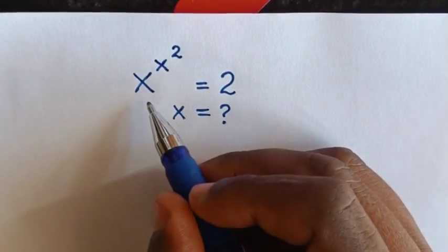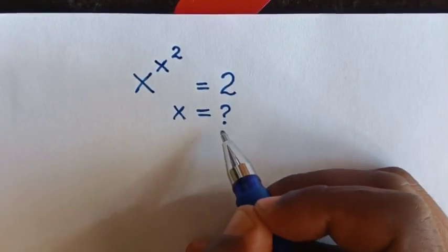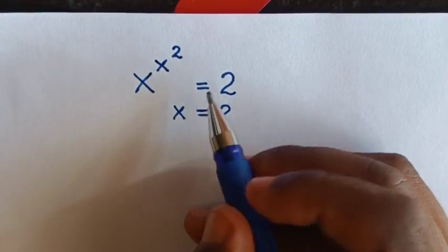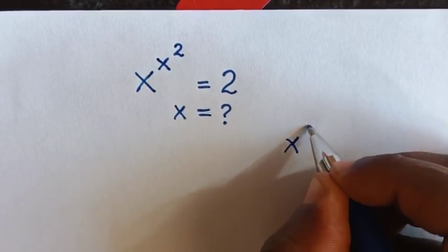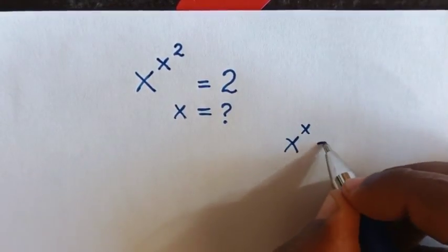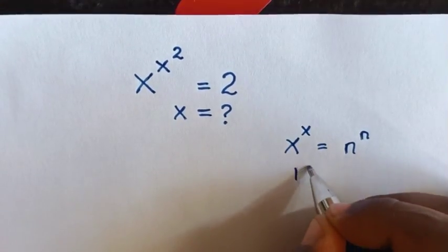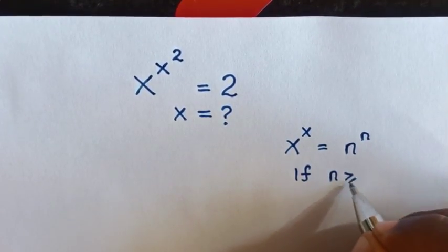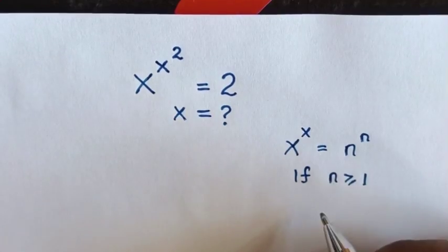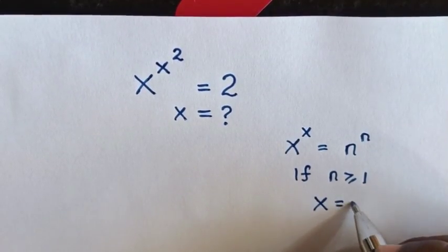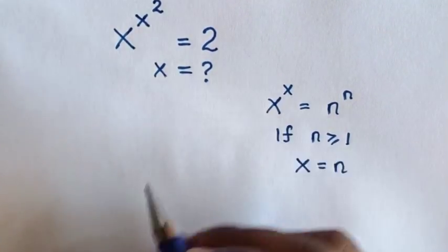Hello. How to solve x power x power 2 is equal to 2, to find the value of x. From this equation, we will apply this form: x power x is equal to n power n. So if n is greater than or equal to 1, when we compare the base and the powers, x is equal to n.